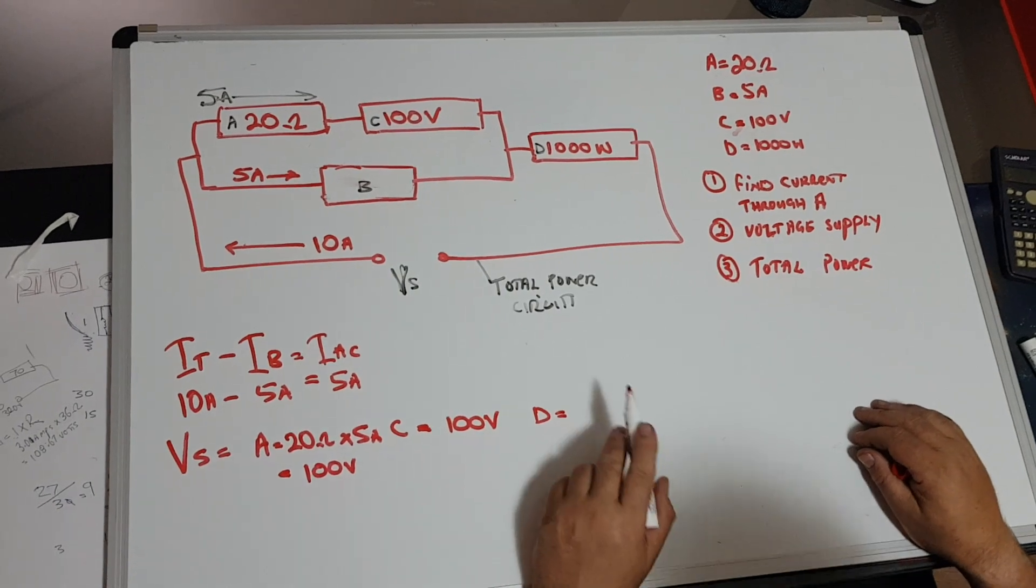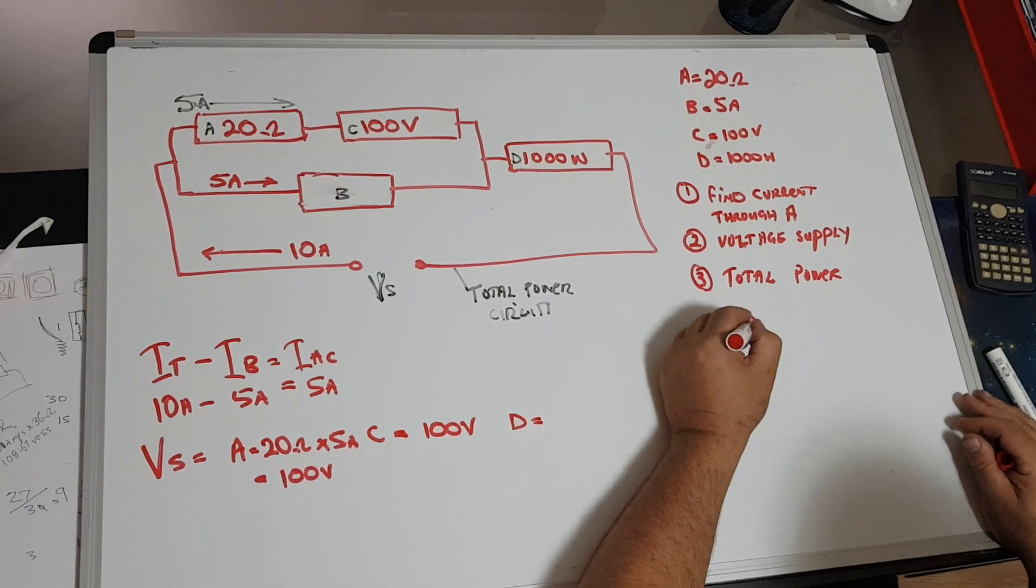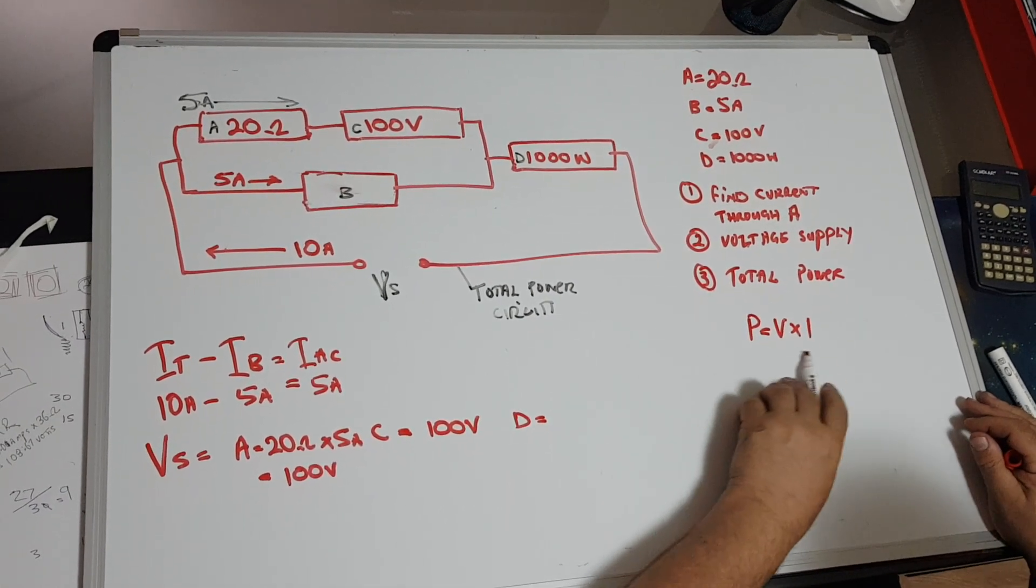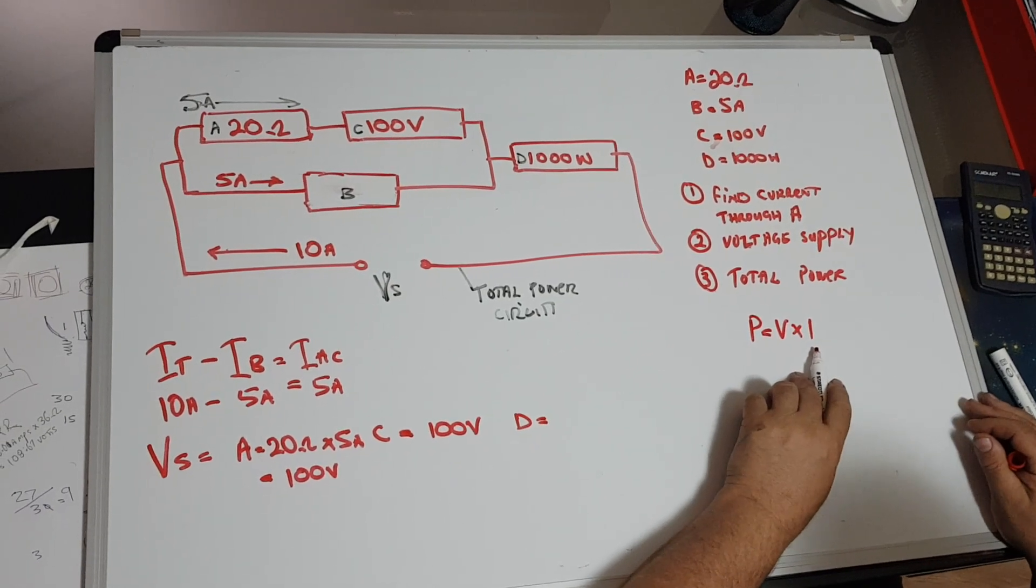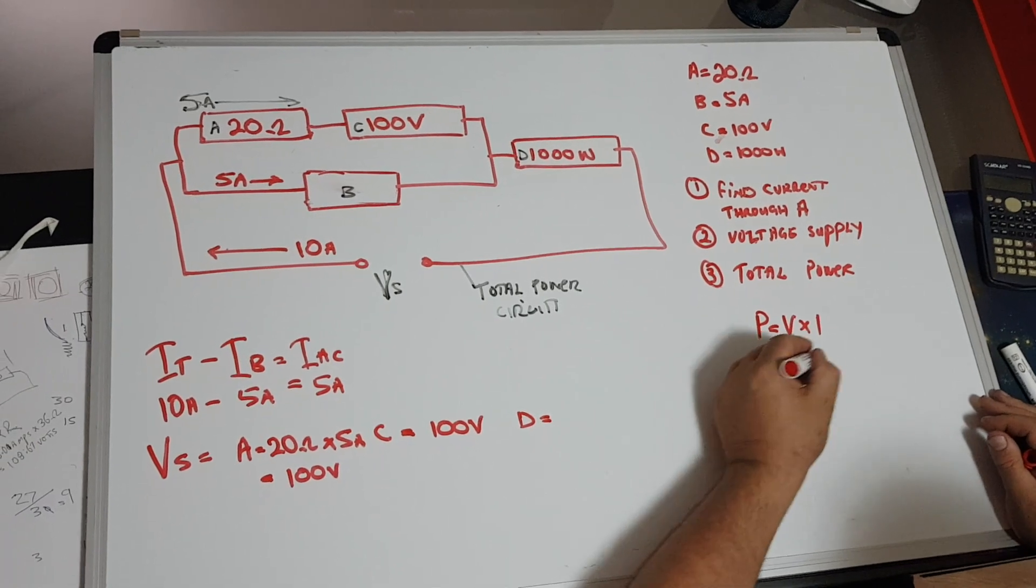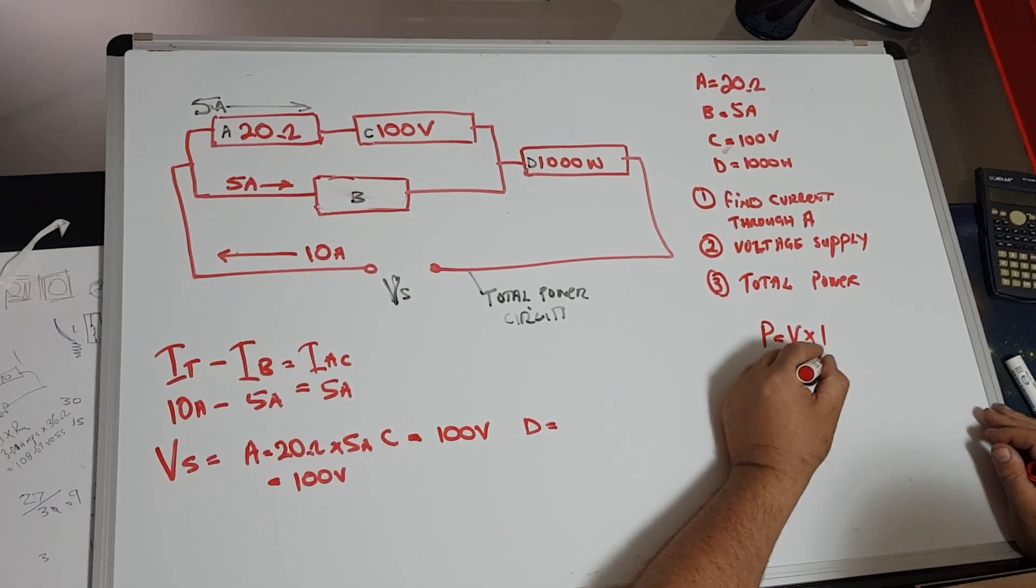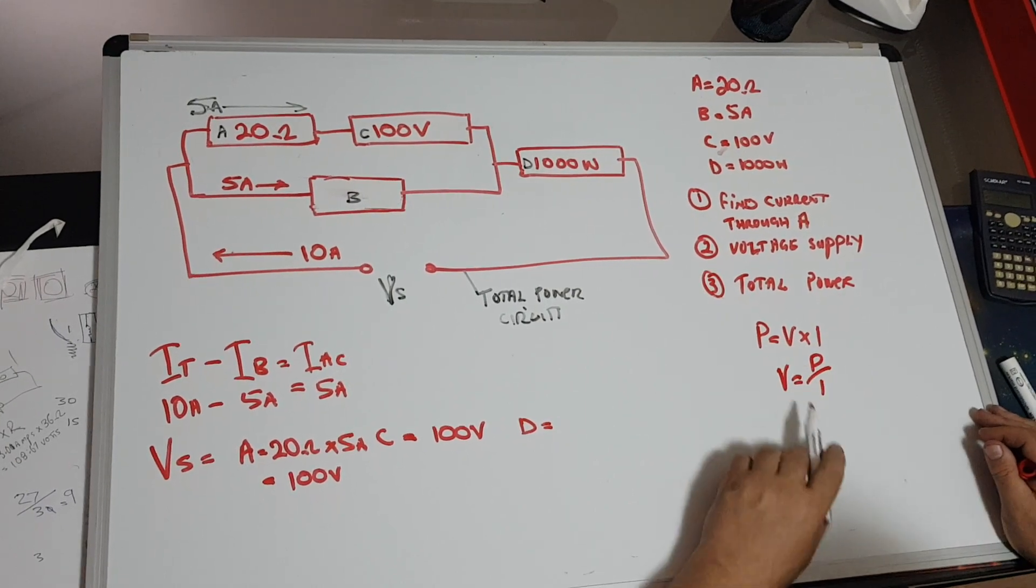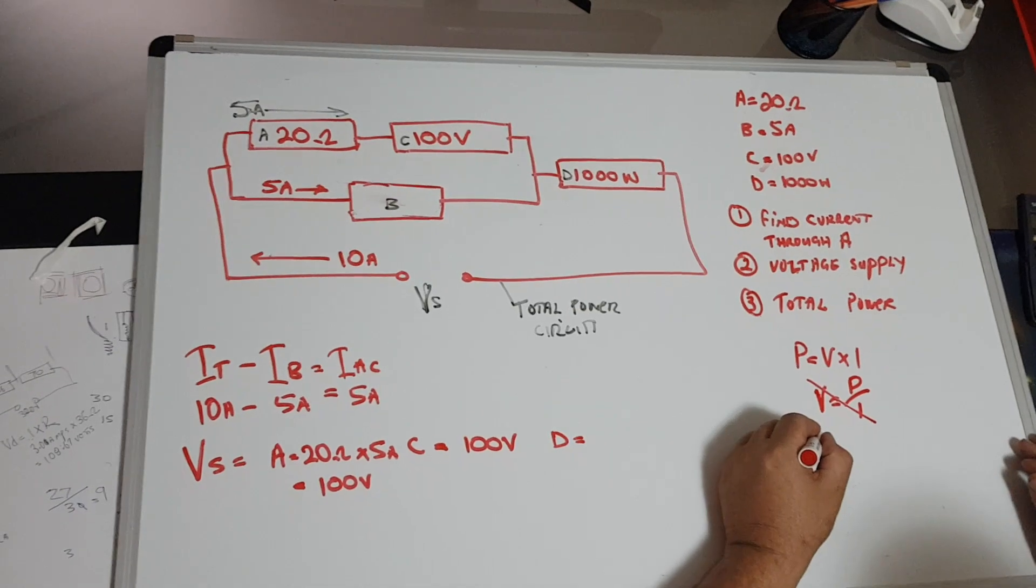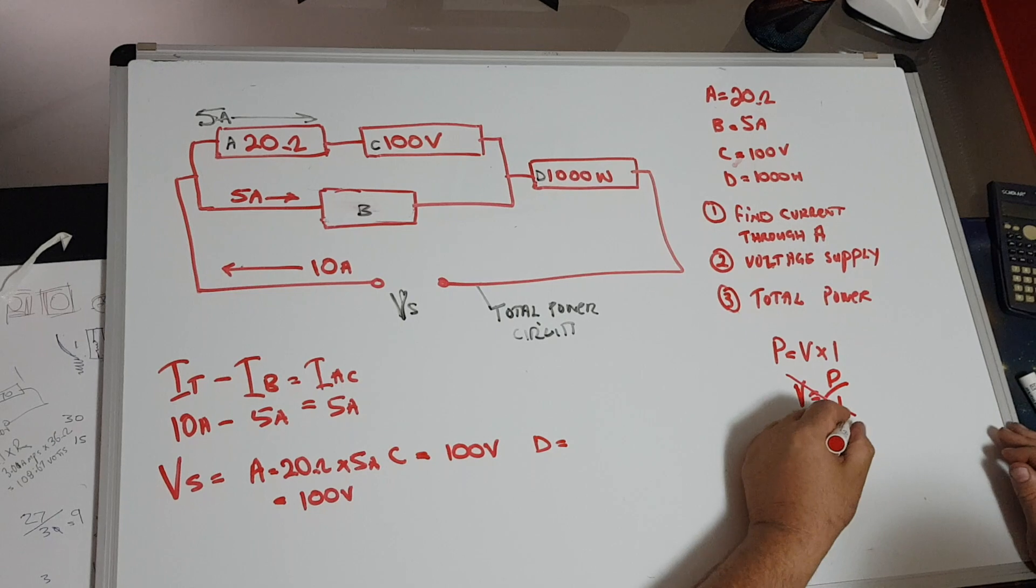And D—normally when we talk about power we have P equals V times I. If I want to transpose that, normally we go voltage equals—and what's the opposite of times is divide—so we go P divided by I, and that'll give the voltage. But we don't want that one; we actually want P over I.